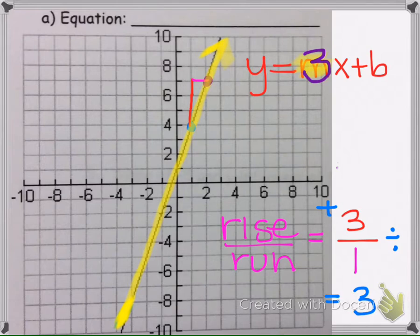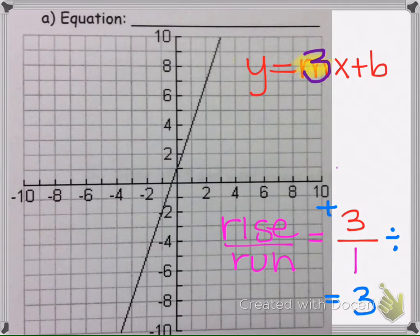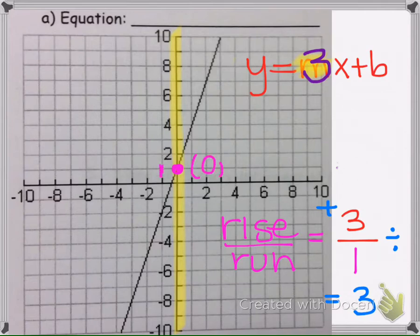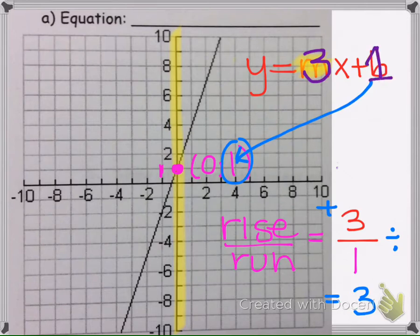Now we need to find our b value. Our b value is the y-intercept — the vertical intercept where the line crosses the vertical axis. The line crosses it at the point (0, 1), so that y value is 1. We put 1 in for b. So our equation is y equals 3x plus 1.